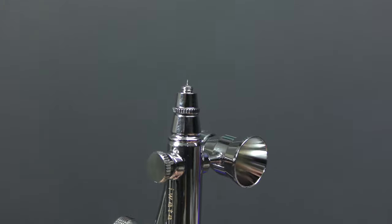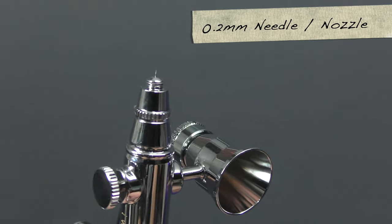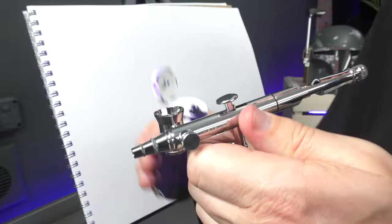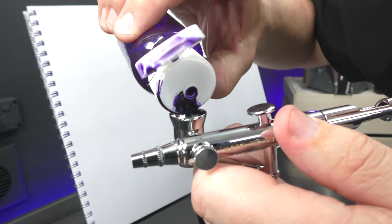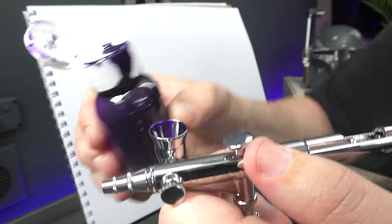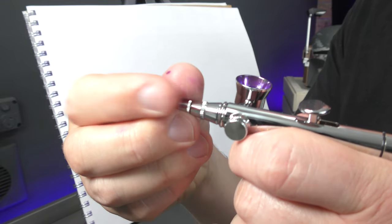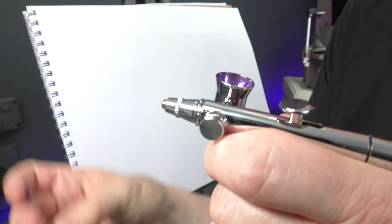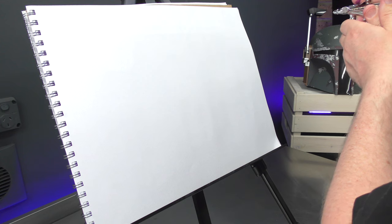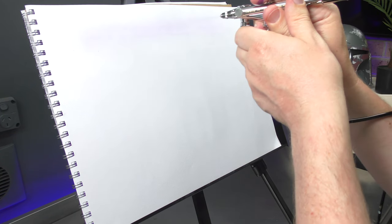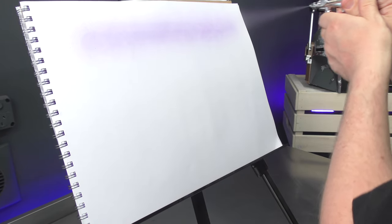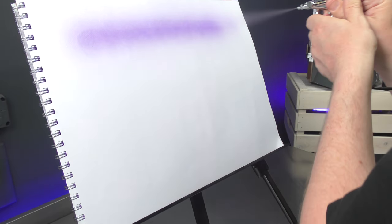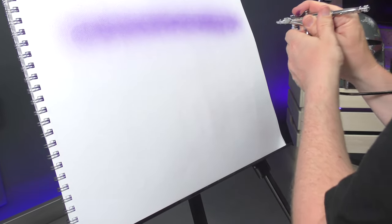And this side feed airbrush runs a 0.2 mil needle nozzle set up, so nice and fine. I'm just going to add some pre-mixed paint into the color cup. I'm going to go ahead and remove the air cap. Just be careful if you do this that you don't drop your airbrush from a distance. Get a bit of dusting on there. Pulling back a bit further so you can see this atomizer is really fine.